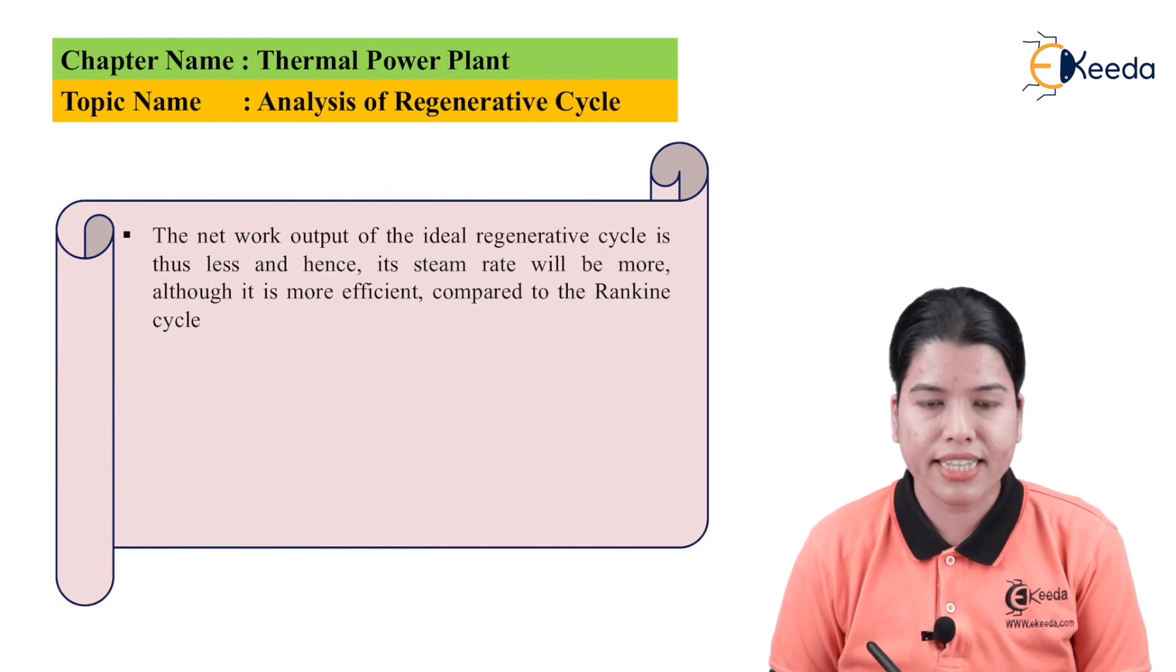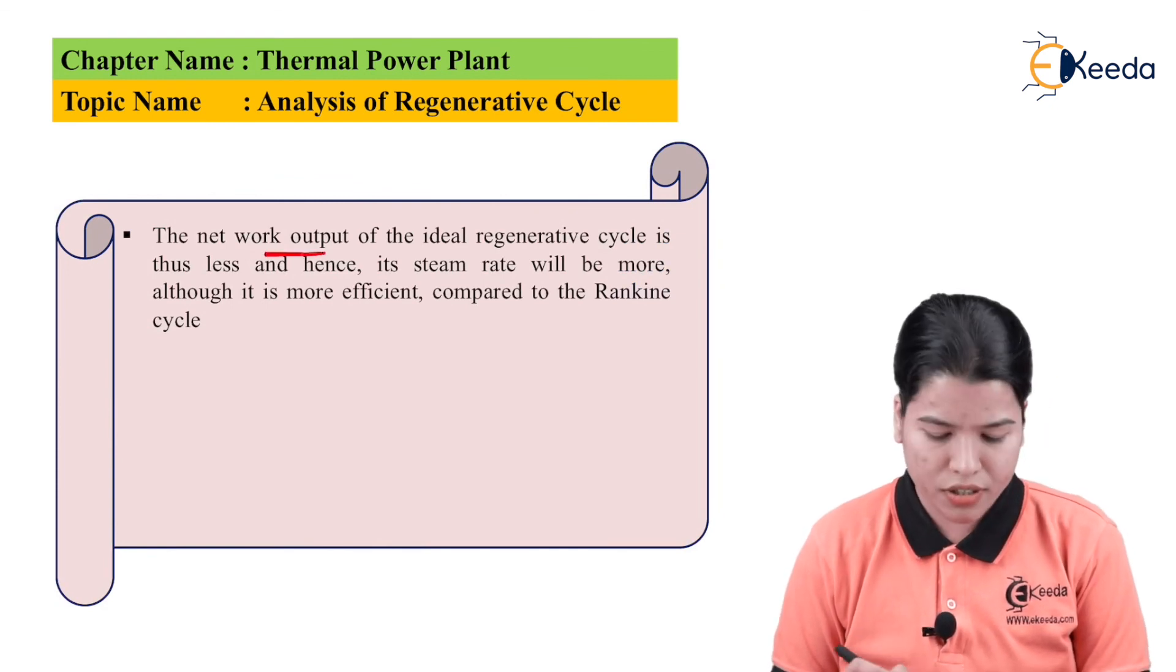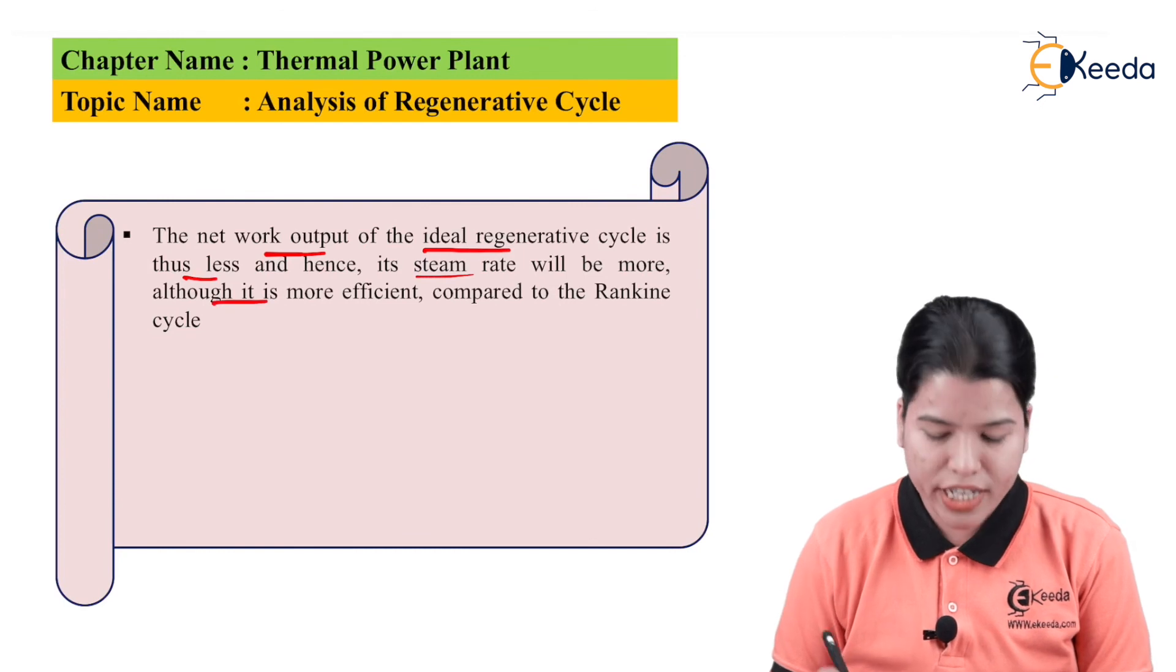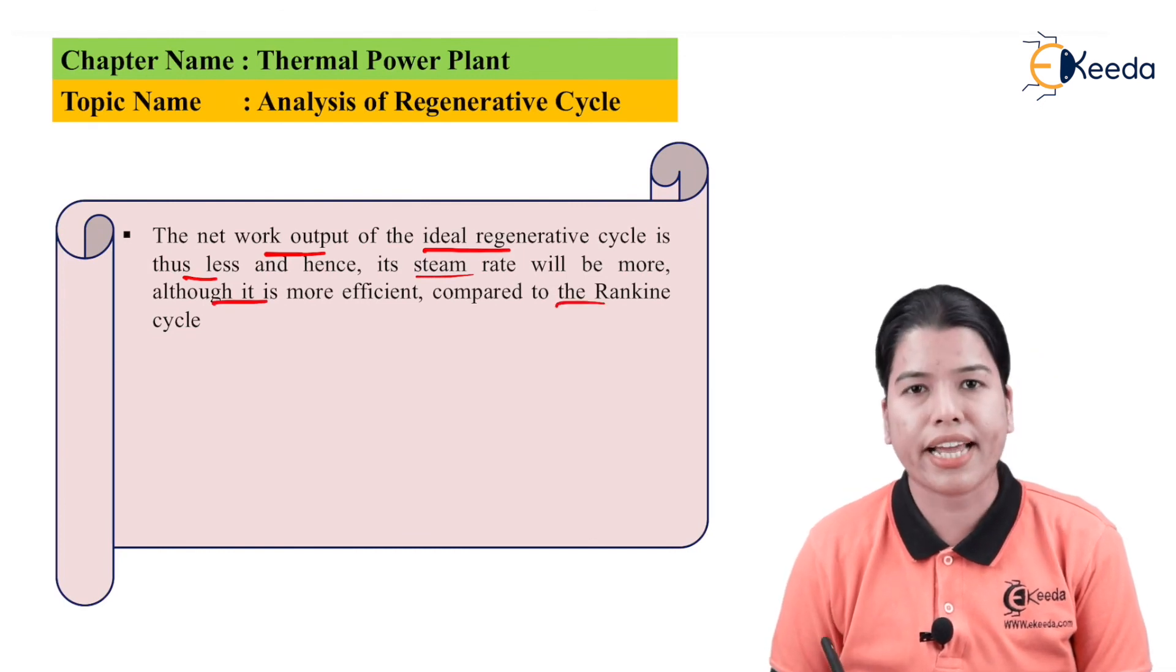Thus, we can say that the net output of work of the ideal regenerative cycle is less, and hence its steam rate will be more, although it is more efficient as compared to the Rankine cycle.